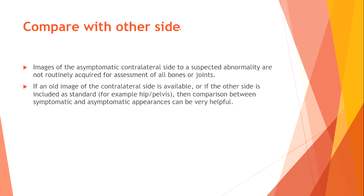Compare with the other side. Images of the asymptomatic contralateral side are not routinely acquired for all bones or joints. However, if an old image of the contralateral side is available, or if the other side is included as standard — for example, hip/pelvis — then comparison between symptomatic and asymptomatic appearances can be very helpful.